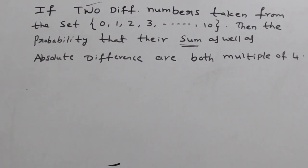If two different numbers taken from the set 0, 1, 2, 3 up to 10, then the probability that their sum as well as absolute difference are both multiple of 4.